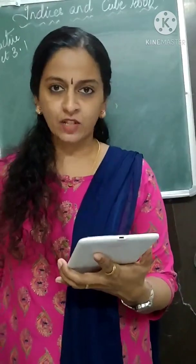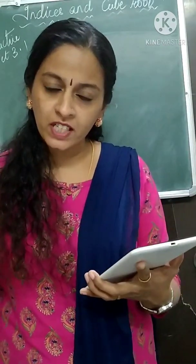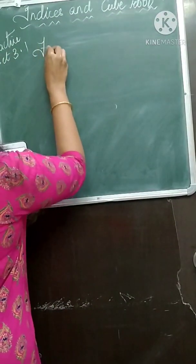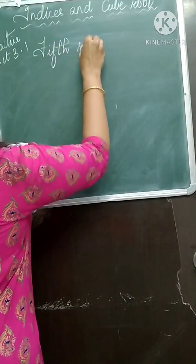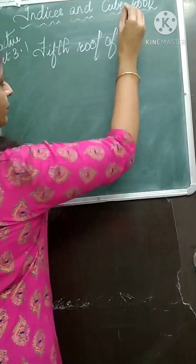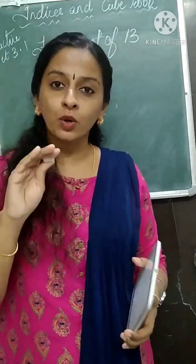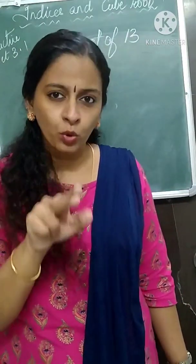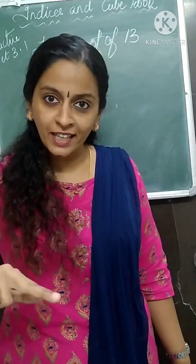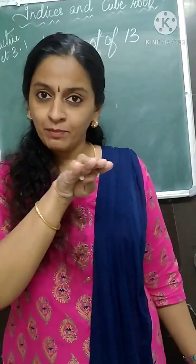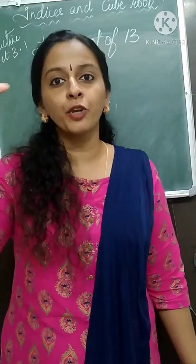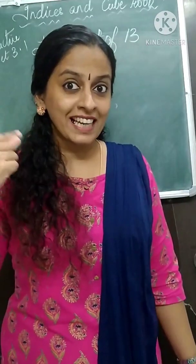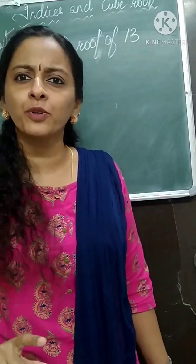They have written it in words; we have to write it in index form. Always remember: if you see the word 'root', that digit will come as the denominator. How to remember it? Root means the root of a plant — most plant roots are under the soil, so root means down, the denominator part. Whereas power means it is the numerator part.